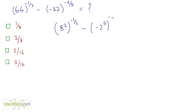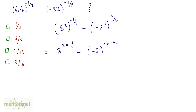Now we have this raised to 4 by 5. This has become simple. Using the law of indices, I can write this as 8 raised to 2 times minus 1 by 2, minus of minus 2 raised to 5 times minus 4 by 5. The 5s cancel and the 2s cancel. So this equals 8 raised to power minus 1, minus of minus 2 raised to power minus 4.